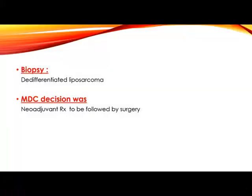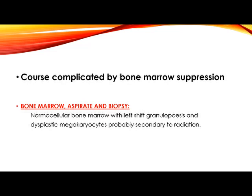Biopsy was taken and showed de-differentiated liposarcoma. Our MDT decision was to go for neoadjuvant radiotherapy followed by surgery. This was in 2016, before the release of the STRASS trial, which will be discussed at the end. The course was complicated by bone marrow suppression, and bone marrow aspiration showed dysplastic changes probably due to radiation therapy.